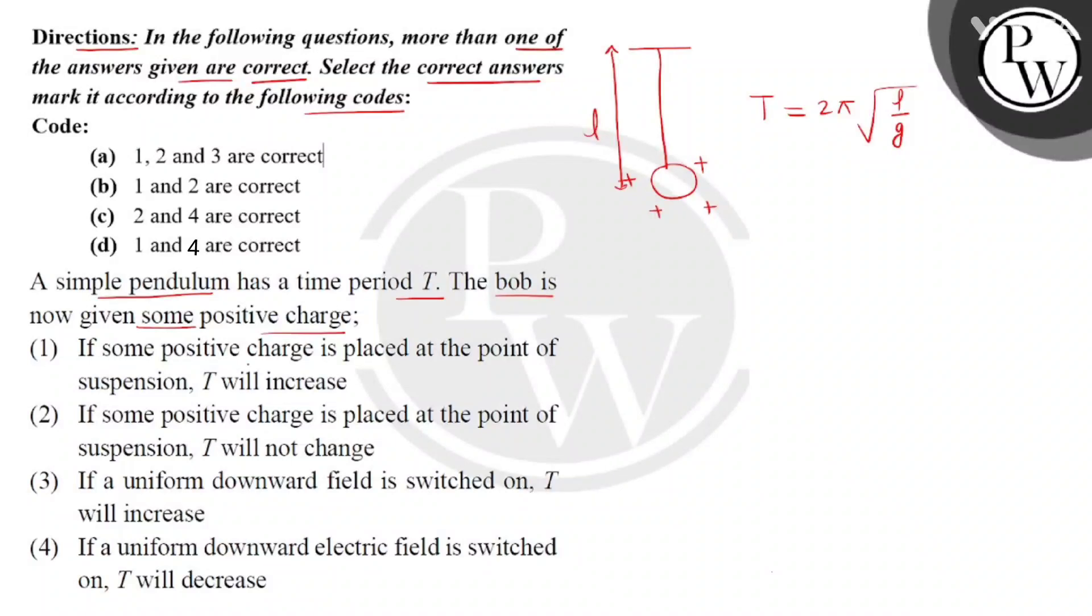Now children, here is statement 1: if we place a positive charge at the point of suspension, then T will increase. Let's see - if we place a positive charge at the point of suspension, and the bob already has a positive charge, then we can see here that a repulsive force will act on this bob. So here will be an acceleration which is equal to F by M.